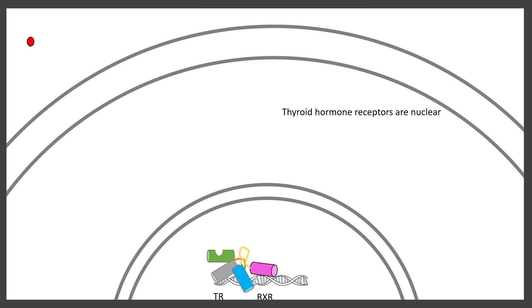Receptors for thyroid hormone or retinoic acid are present in the nucleus all the time — this was asked in IIT JAM 2021. These receptors form heterodimers, such as thyroid receptor with RXR or retinoic acid receptor with RXR. These heterodimeric complexes are always bound to DNA, and upon ligand input there is transcriptional activity. Normally these receptors are bound with a repressor, but upon ligand binding they switch to an activator, thereby activating their target genes.